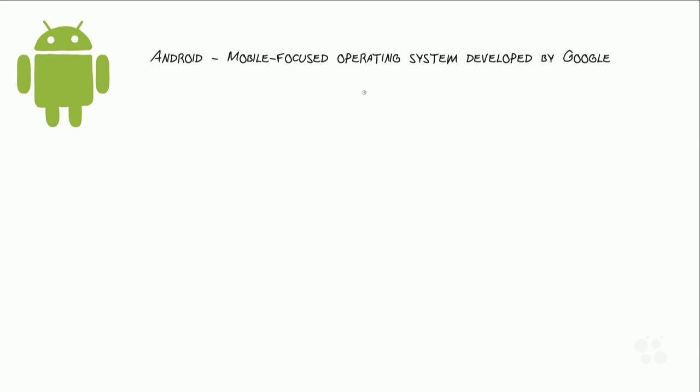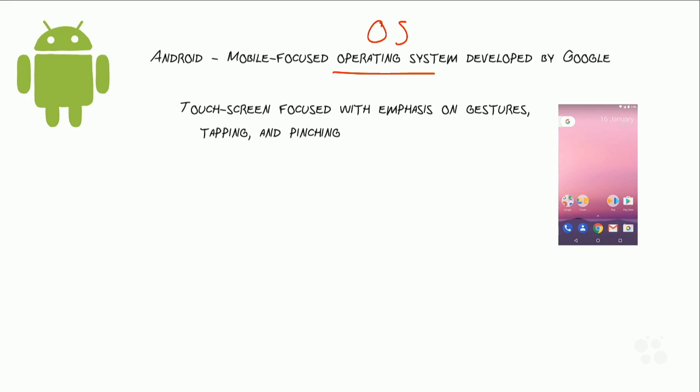Just in case you are unfamiliar with Android, Android is a mobile-focused operating system, or OS, that has been developed by Google. As a mobile-focused operating system, Android is developed with a different emphasis or a different focus. Android is intended from the ground up to be run on devices that are mobile, that you're going to carry around with you — your cell phone, your tablet.